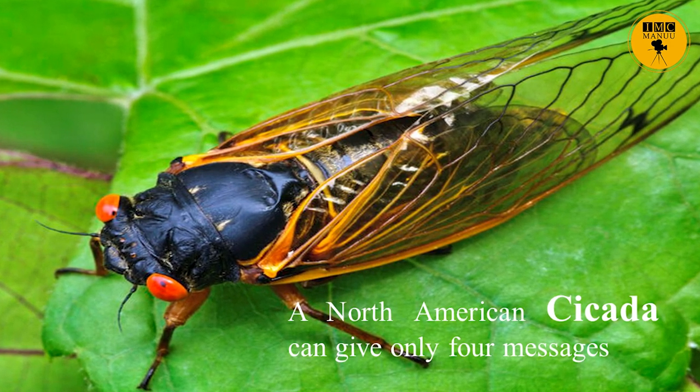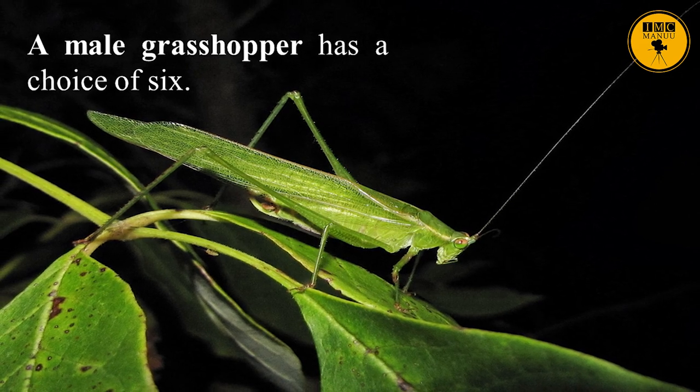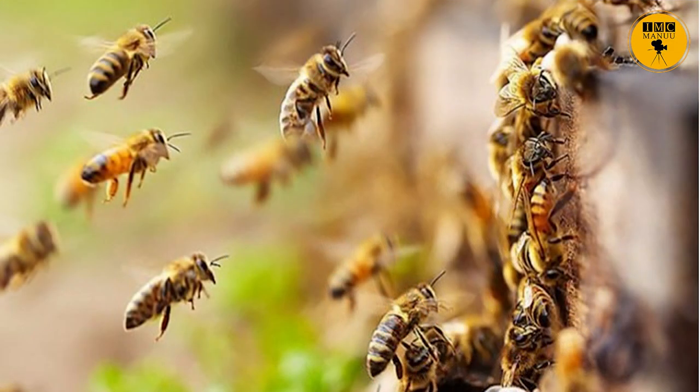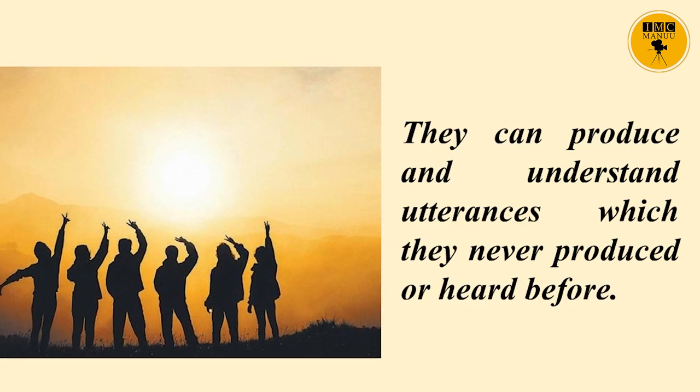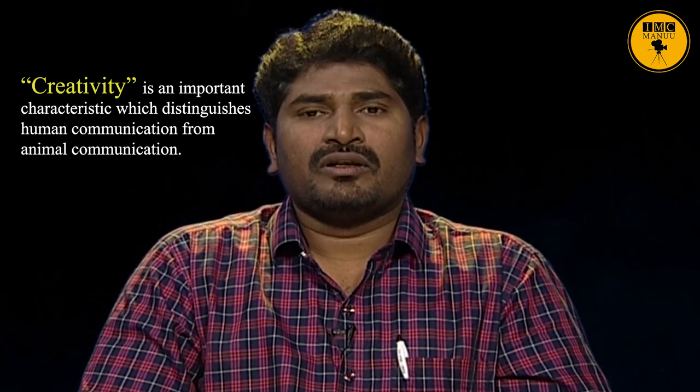Most animals have a fixed number of messages which are sent in clearly definable circumstances. For example, a North American chickadee can give only four messages, and a male chaffinch has a choice of six expressions. Research conducted on dolphins, birds, and bees has also shown that they are unable to say anything new. Human beings, on the other hand, can talk about anything they like — they can produce and understand utterances which they have never produced or heard before. It is also not necessary that the same situation would make them utter the same thing each time. Creativity is an important characteristic which distinguishes human communication from animal communication.